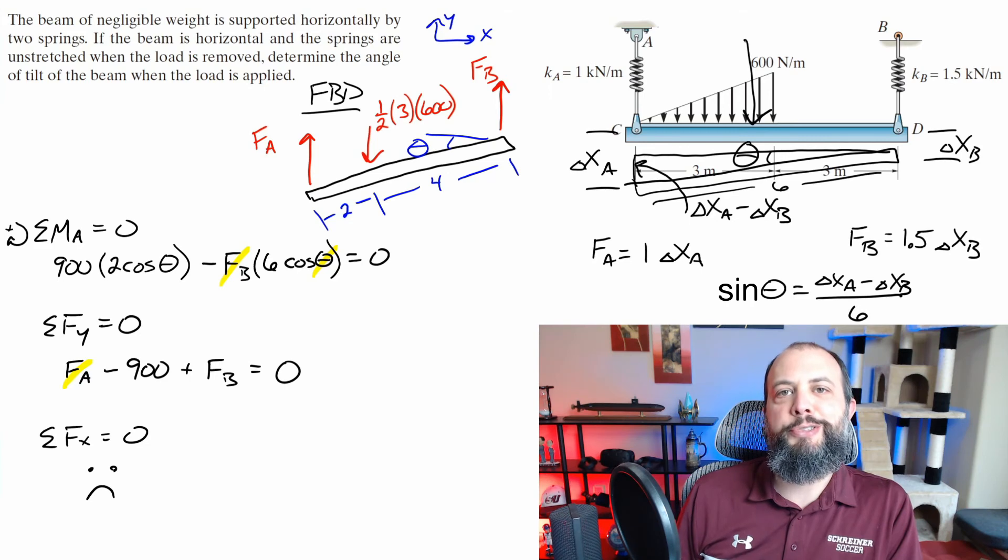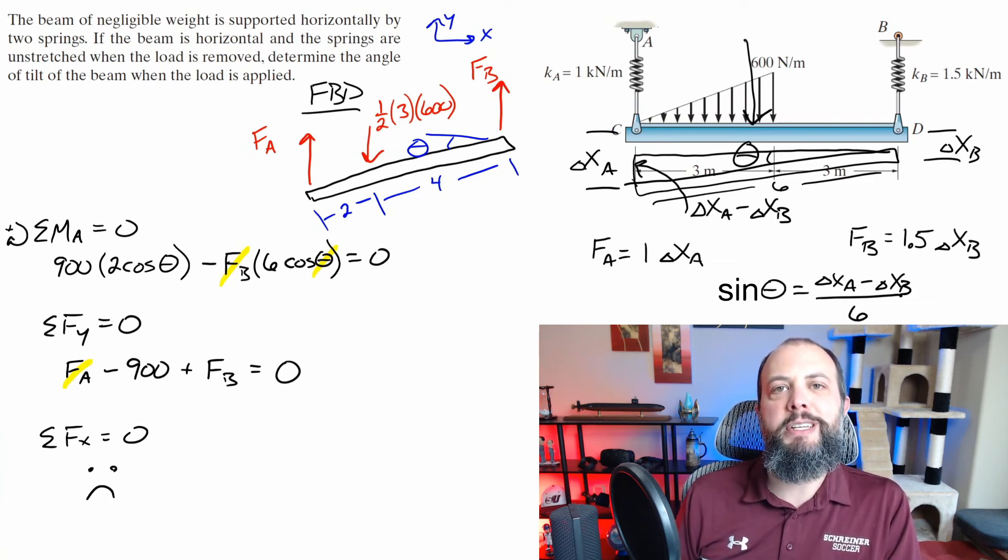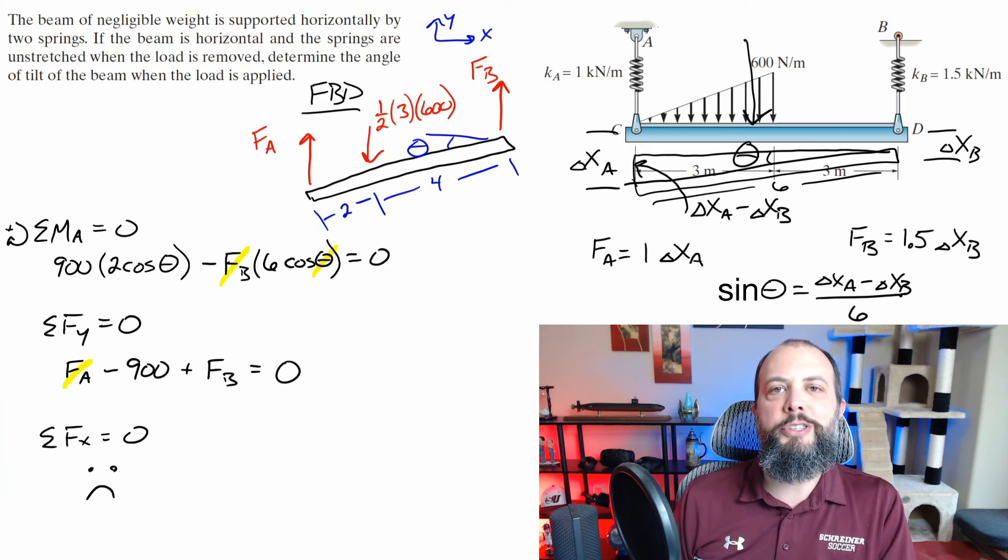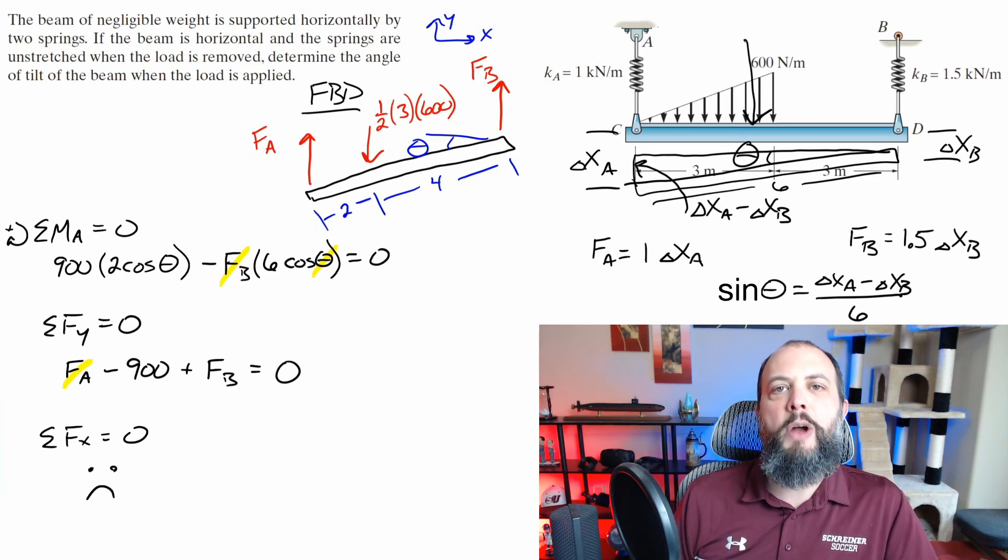So the sad smiley face shows you that there's no forces in the X direction on this problem, so we can't actually use that as an equation of equilibrium to help us. And the reason that's a problem is that we have three unknowns in the moment and Y direction equation. In order to solve this problem, we're going to have to create a separate equation using those change in lengths due to the spring in order to relate the forces to the angle. And so that's why I drew the triangle over on the drawing to the right hand side.